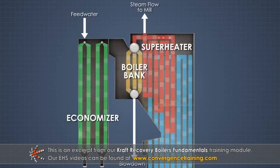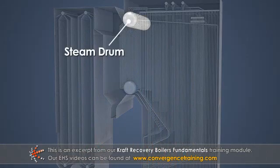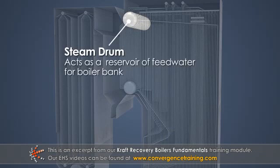Feed water enters through the economizer and then flows to the steam drum. The steam drum is a large cylindrical vessel situated horizontally across the boiler that acts as a reservoir of feed water for the boiler bank.